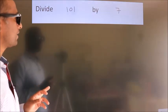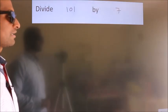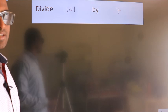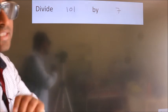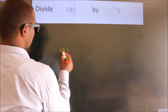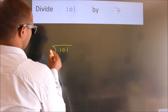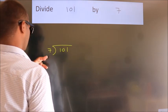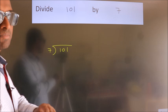Divide 101 by 7. To do this division, we should frame it in this way: 101 here, 7 here. This is step 1.